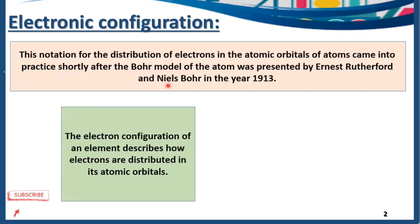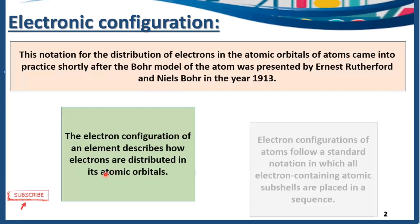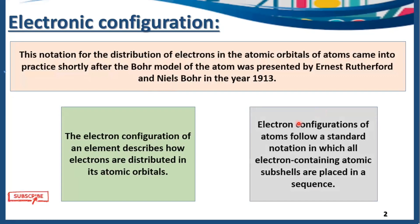What is electronic configuration? The electron configuration of an element describes how electrons are distributed in its atomic orbitals. Electron configurations of atoms follow a standard notation in which all the electron-containing atomic subshells are placed in a sequence.